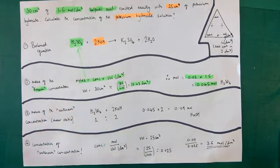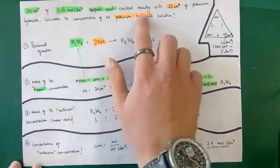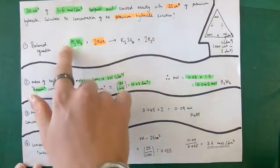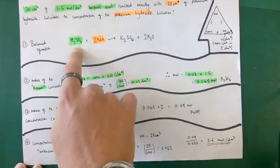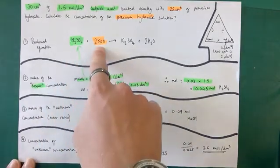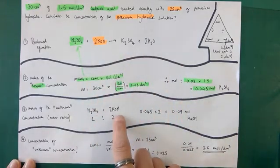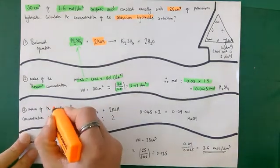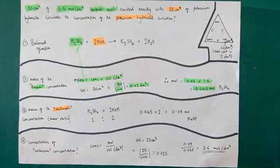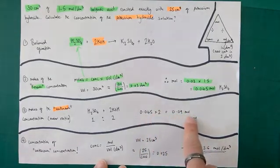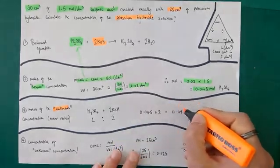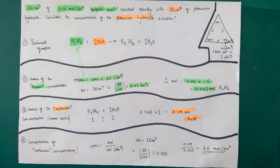Now I work out the moles of the unknown — the potassium hydroxide, for which I only have a volume. From the balanced equation, there is no number in front of H₂SO₄, so one mole of sulfuric acid reacts with two moles of potassium hydroxide — a 1 to 2 ratio. So 0.045 times 2 gives 0.09 moles of potassium hydroxide.